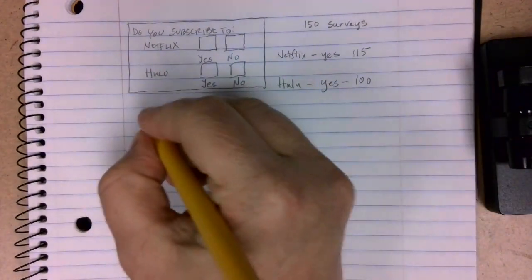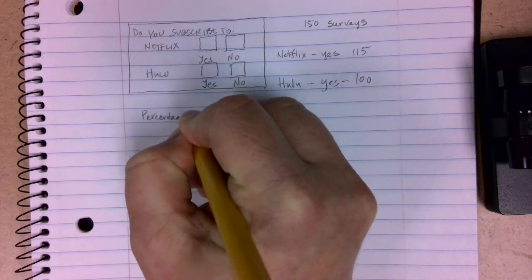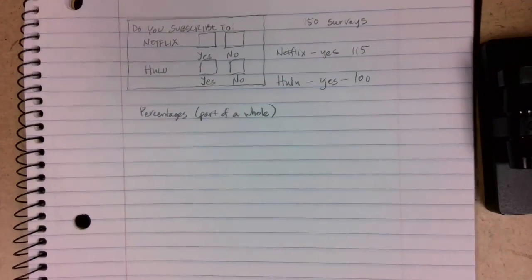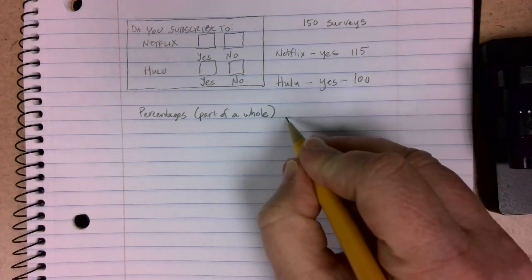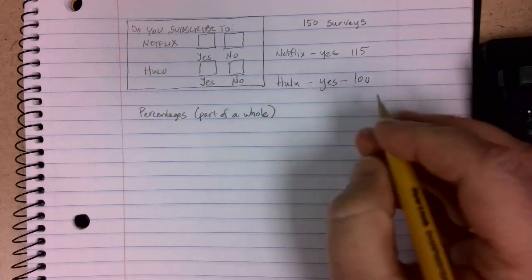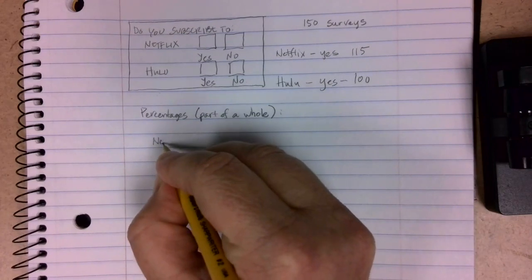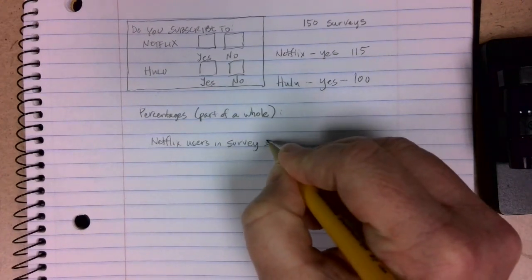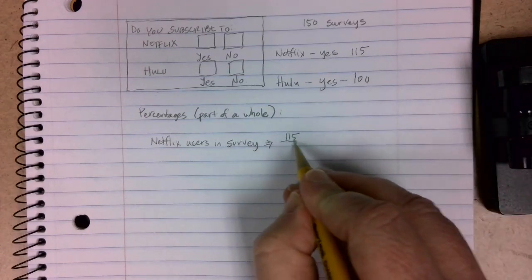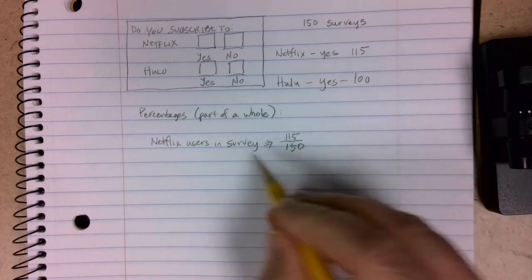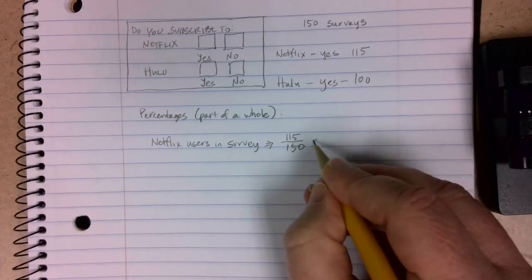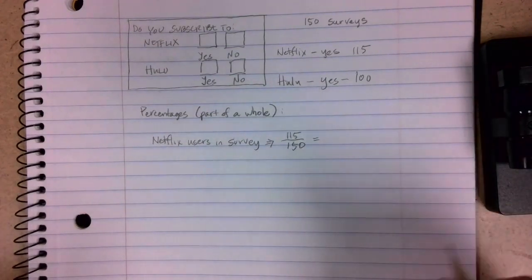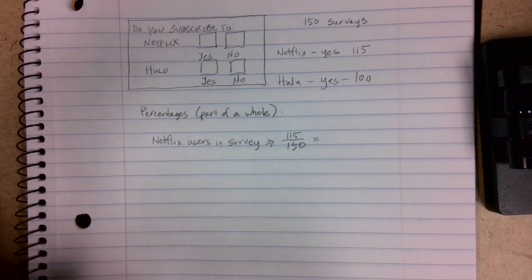Now, if we wanted to talk about percentages, remember that percentages are part of a whole. We can figure out percentages by looking at a fraction of what part applies divided by how many total possibilities there are. Remember, fractions can be - this fraction bar line is equivalent to a divide symbol, and we can divide those on your calculator.